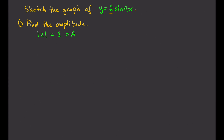Next is find the period of the function. How do we find the period? There's a formula for period, and the formula is 2π over the absolute value of b.